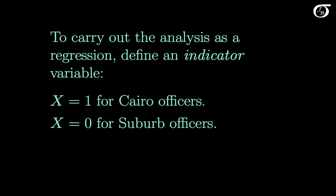The explanatory variable is a categorical variable here, whether the officer is an officer in Cairo or in the suburbs. To carry out the analysis as a regression, we're going to have to turn that into a quantitative variable in a sense by defining an indicator variable.